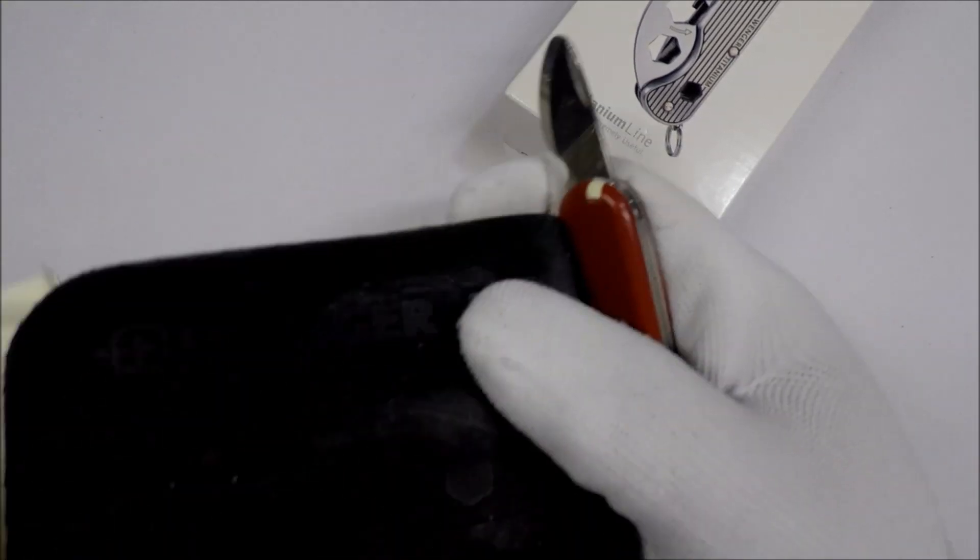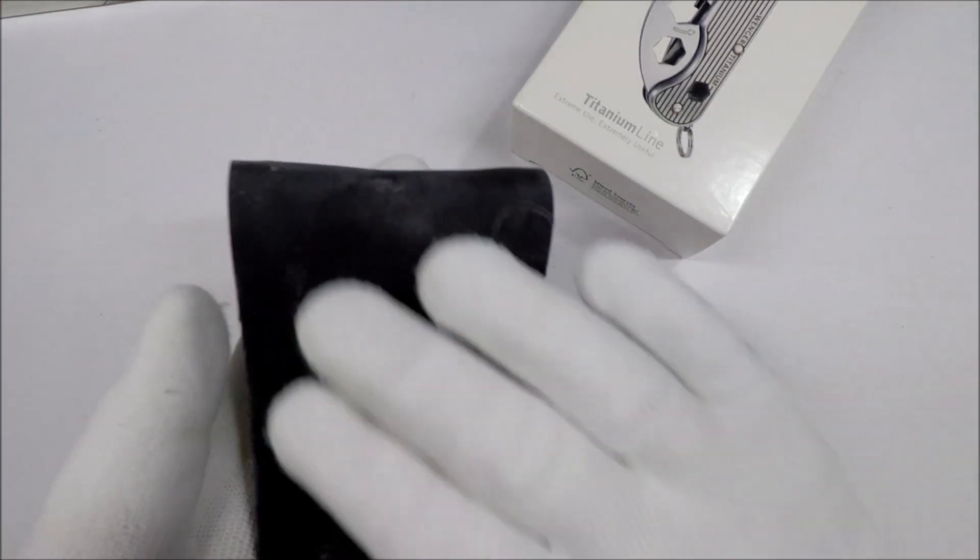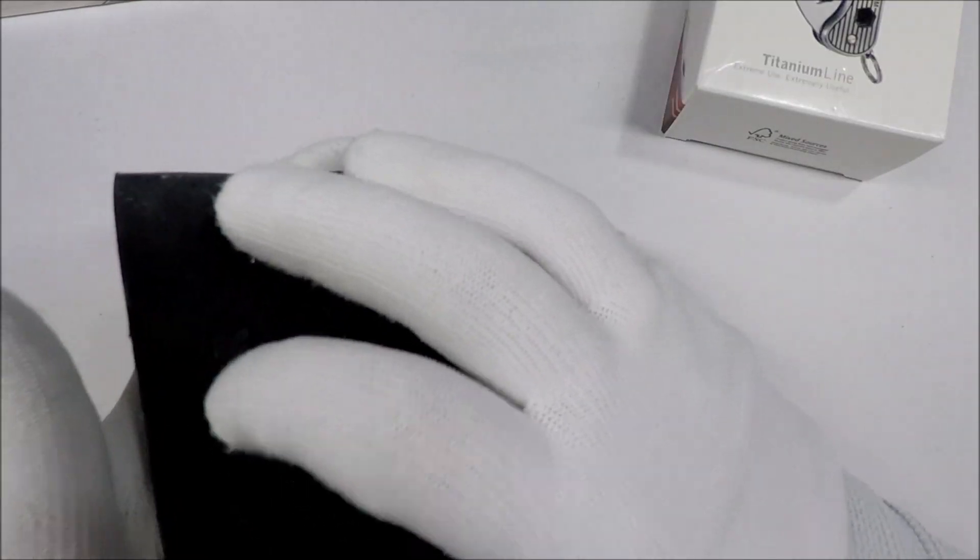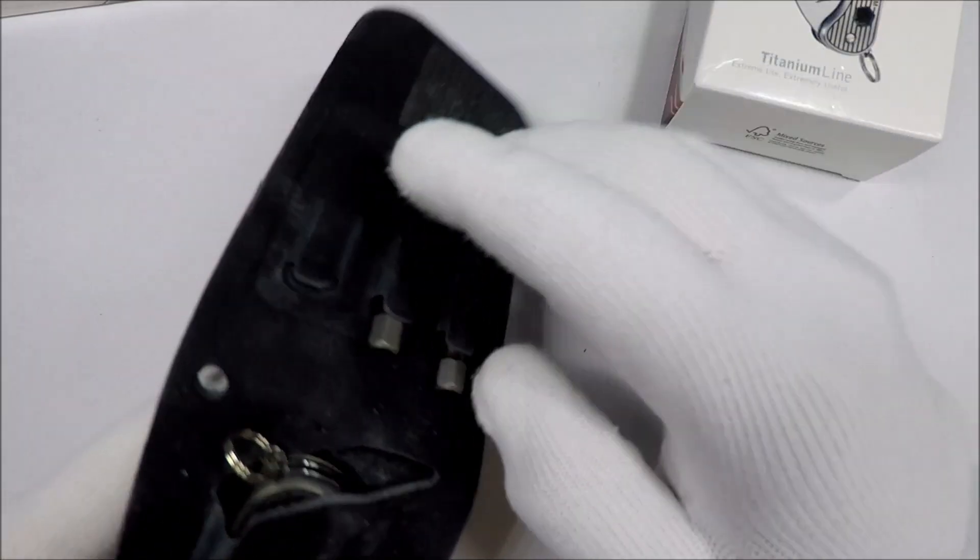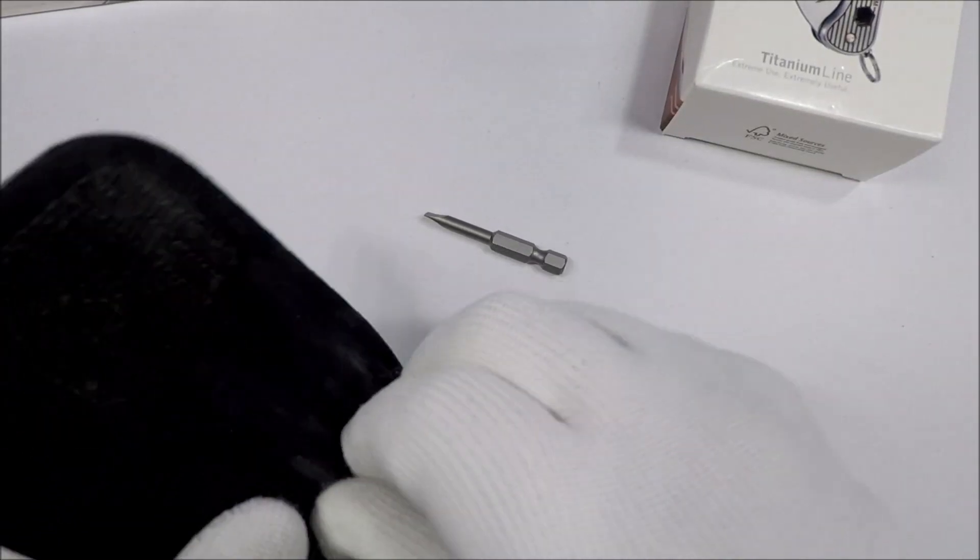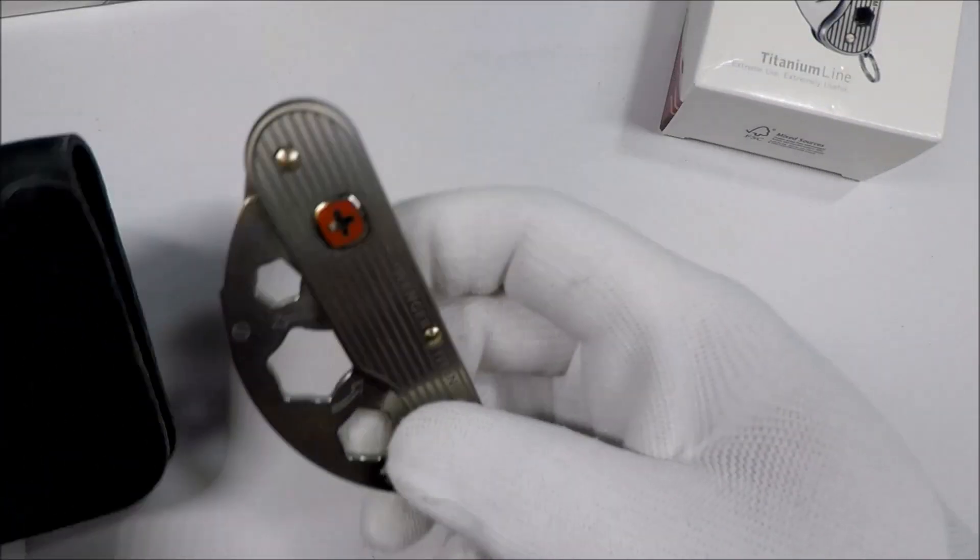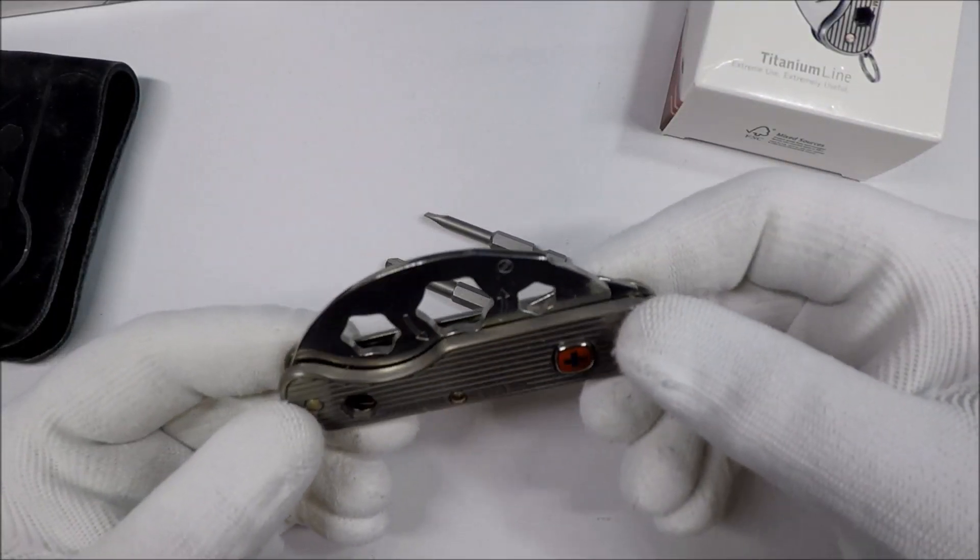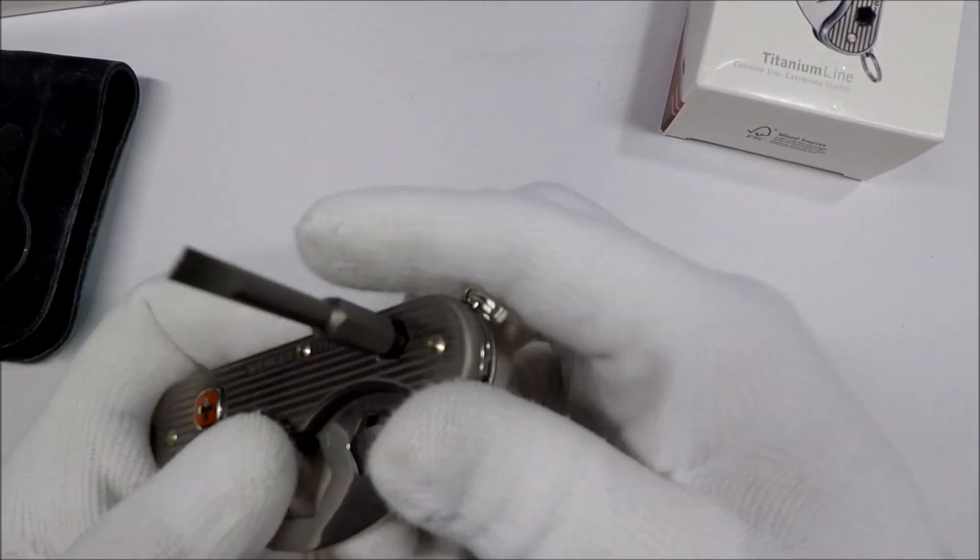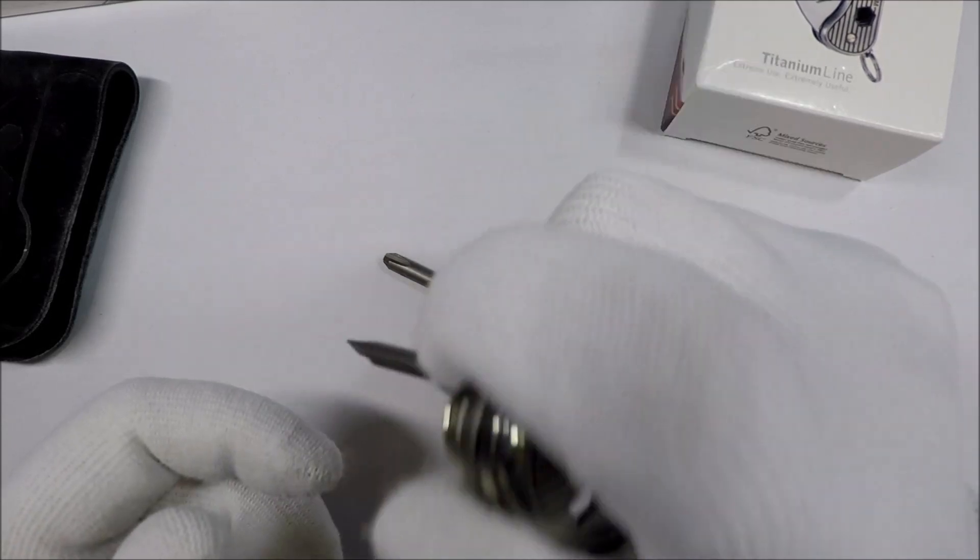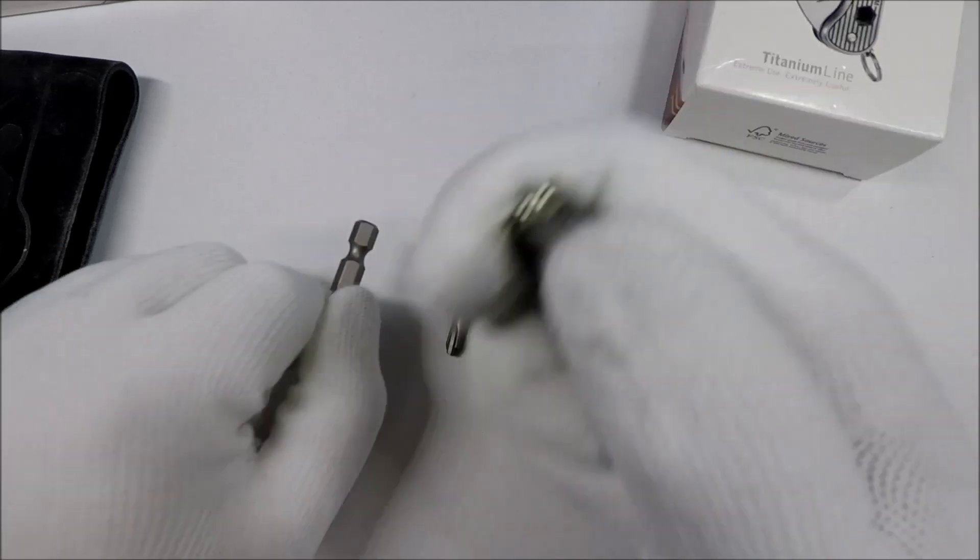And one thing that they do have that's the same is they all come with one of these little sheaths. And this is kind of like neoprene. I'm pretty sure it is neoprene. They come with like a neoprene sheath and they all come with two bits. Yeah, this is the titanium one. Now the bits insert here and here in the scale so you can get a lot of pressure behind it if you need to and really crank.